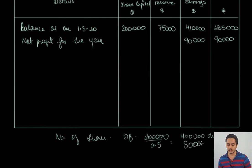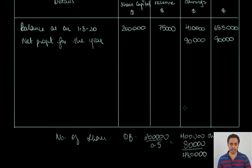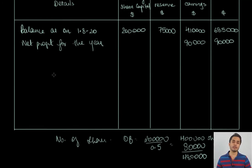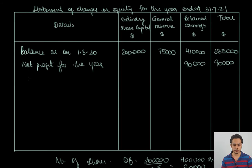Adding the 80,000 shares issued during the year gives a total of 480,000 shares. This is multiplied by $0.02 per share, giving an interim dividend of $9,600, which will be deducted from the retained earnings column.